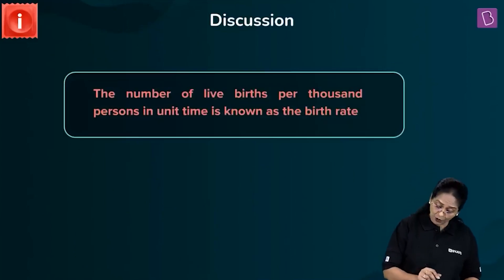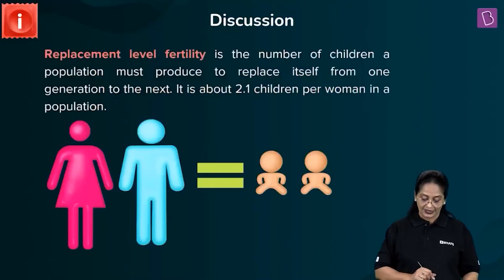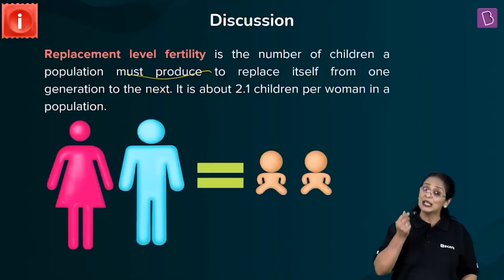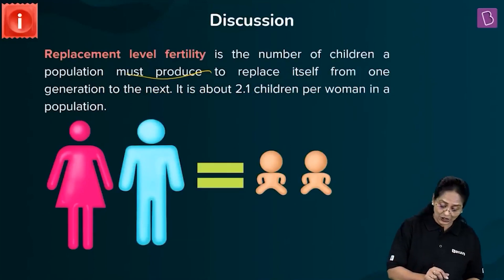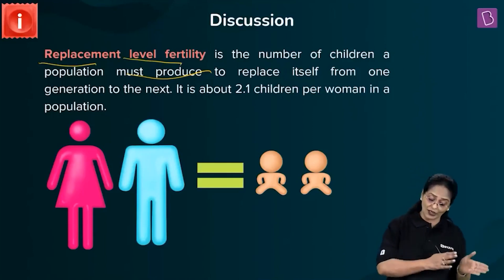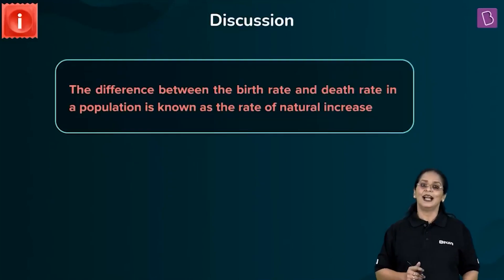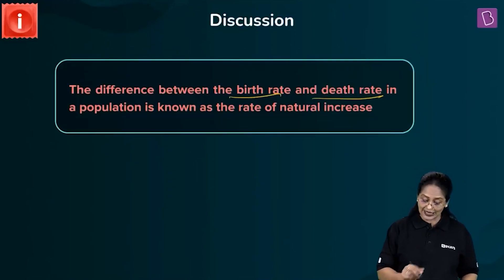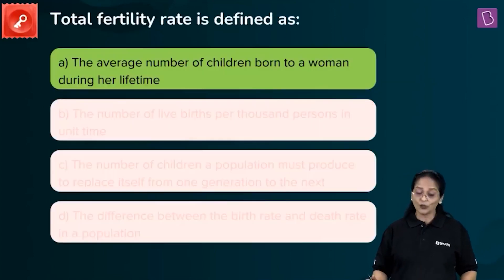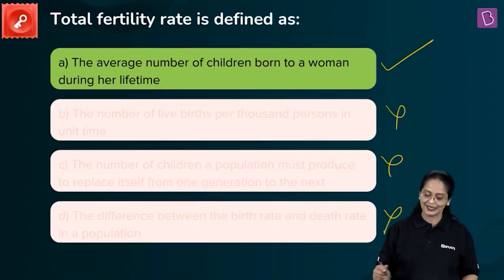What is birth rate? The number of live births per thousand persons in unit time is called the birth rate. The number of children a population must produce to replace itself from one generation to another is called replacement level fertility — it is about 2.1 children per woman. The difference between the birth rate and death rate in a population is known as the rate of natural increase. So, total fertility rate or TFR is the average number of children born to a woman during her lifetime — option A is the right answer; we eliminate B, C, and D.